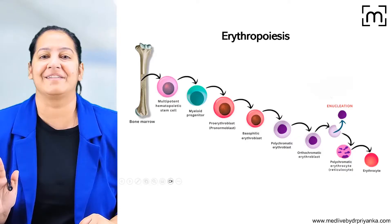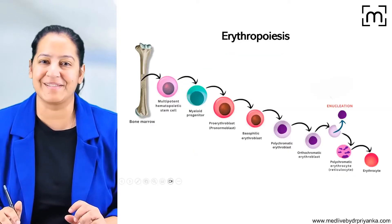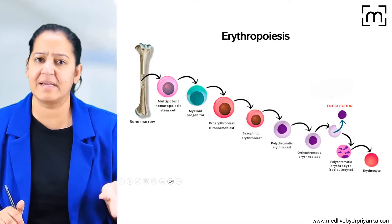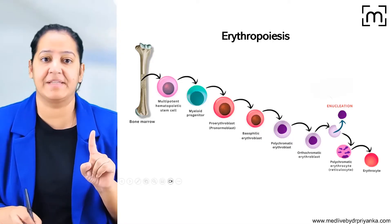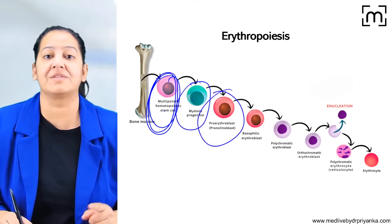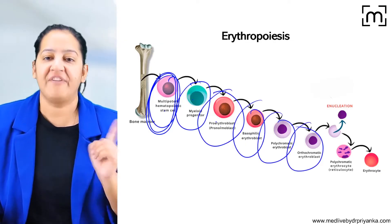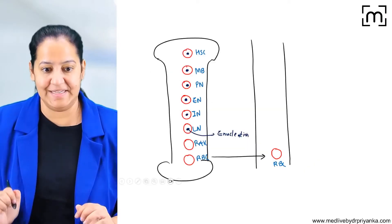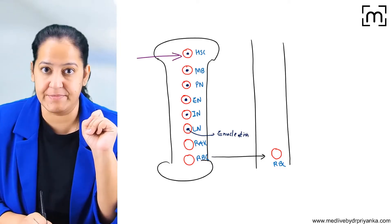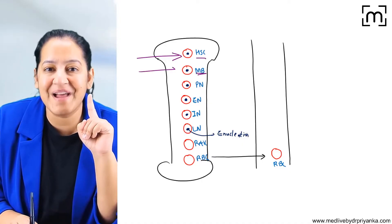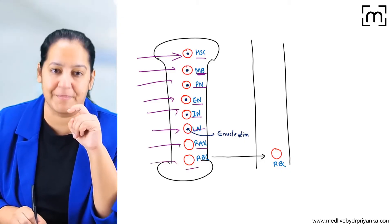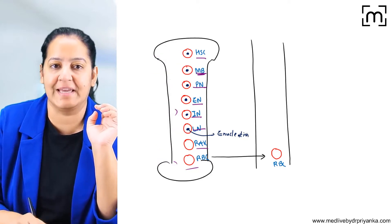Before understanding the topic, let's revise erythropoiesis — how does RBC get synthesized? In the blood we have three cells: RBCs, WBCs, and platelets. All three cells are synthesized in the bone marrow. The first cell is the hematopoietic stem cell, which gives rise to myeloblast. Myeloblast gives rise to pronormoblast, which gives rise to early, intermediate, and late normoblast. Finally, reticulocyte is formed, and then the RBC is formed. You can see this pathway in the diagram.